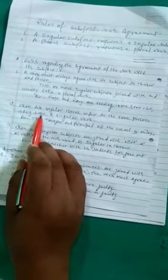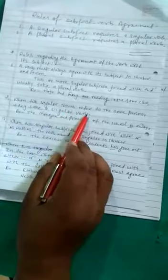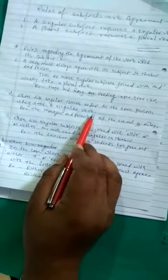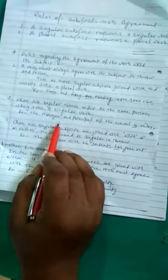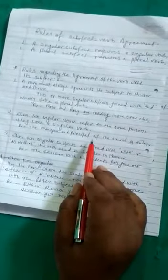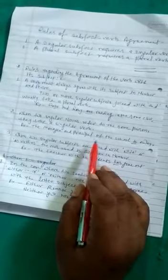Rule second. When two singular nouns refer to the same person, they take a singular verb. As for example, the manager and principal of the school is away. Here, the two nouns refer to one person.